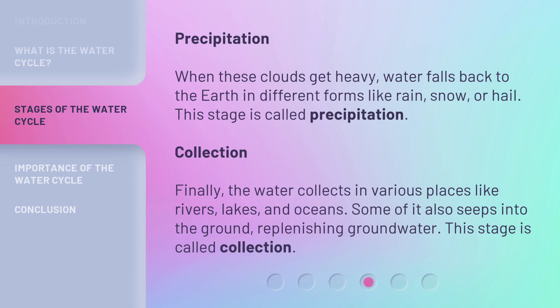Precipitation. When these clouds get heavy, water falls back to the Earth in different forms like rain, snow, or hail. This stage is called precipitation.